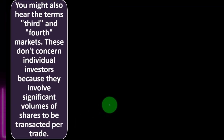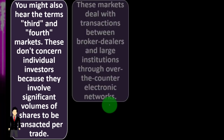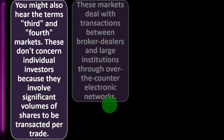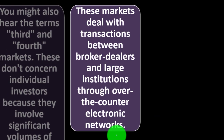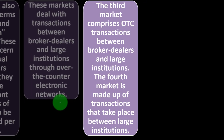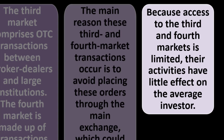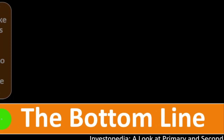You might also hear the terms third and fourth markets. These don't concern individual investors because they involve significant volumes of shares per trade. These markets deal with transactions between broker-dealers and large institutions through over-the-counter electronic networks. The third market involves OTC transactions between broker-dealers and large institutions; the fourth market is made up of transactions that take place between large institutions. The main reason these transactions occur is to avoid placing orders through the main exchange, which could greatly affect the price of the security.